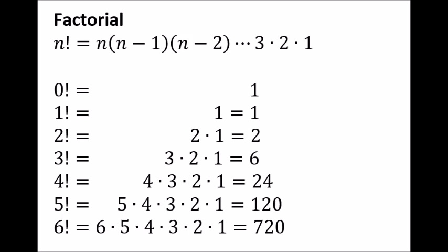So consider six factorial in the bottom line. It is equal to six times five times four times three times two times one. The final answer is 720. The exclamation mark is the notation we use for factorials.